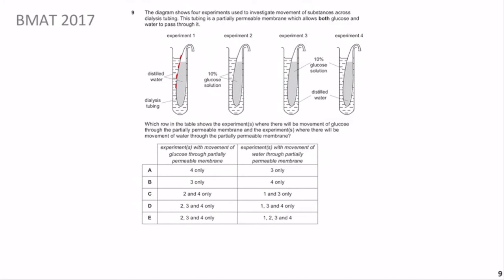Welcome back. In Experiment 1, distilled water is both outside and inside the dialysis tubing. There's no water potential gradient, so there's no osmosis and no net movement of water. However, the question asks about mere movement, not net movement. Water molecules will still be crossing the membrane - five going out, five coming back in - so there is movement but no net movement. This distinction is critical: read carefully whether the question asks for net movement or just movement.